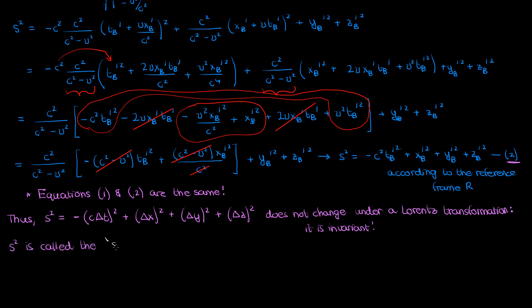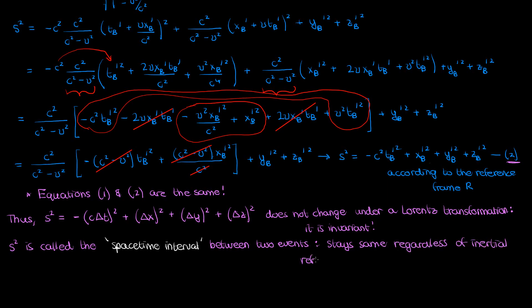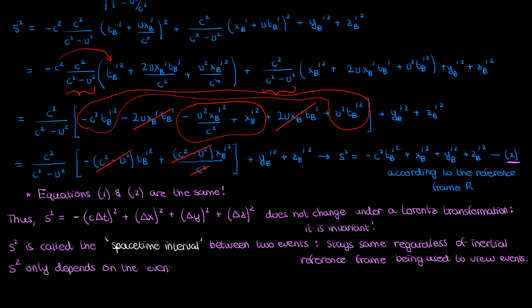This s squared has a special name: it's known as the spacetime interval. It denotes the separation between two events in spacetime. The spacetime interval between two events stays the same regardless of what inertial reference frame you use to view those events. The individual components like delta x squared might change between Lorentz transformations, but the overall spacetime interval s squared will not. Because s squared depends only on the events themselves and not on the reference frame or coordinates, we can use it to tell us the nature of those two events.